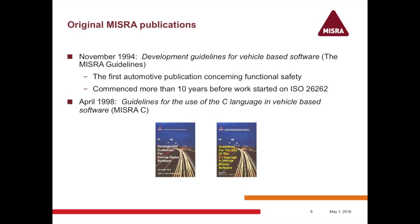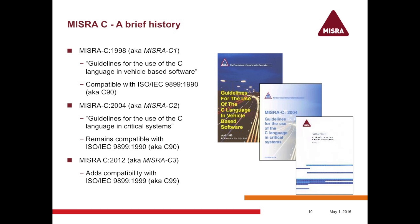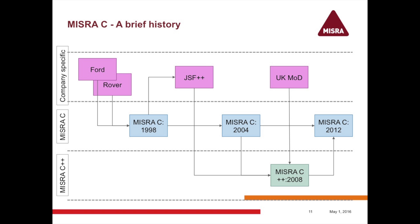In 1994, a consortium mostly from the automotive industry was put together with a small amount of government funding and produced a document called Development Guidelines for Vehicle Based Software — the MISRA guidelines. I can recommend these to anybody even twenty-odd years on. It predates ISO 26262, predates a lot of the standard work in ISO 12207 and similar. Then in 1998, the first MISRA C guidelines for the use of C language in vehicle-based software were produced. Then in 2004, the second edition, and there was a paradigm shift — it became guidelines for critical systems, not just automotive.